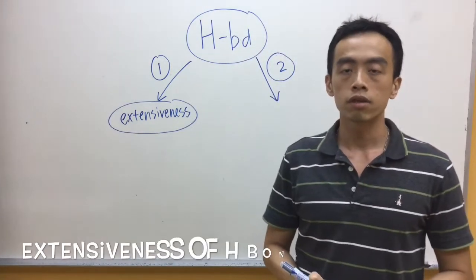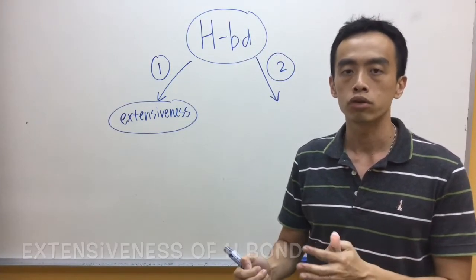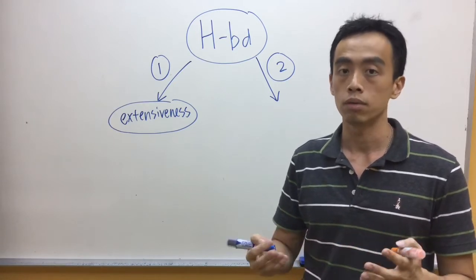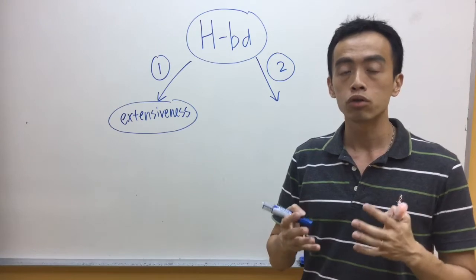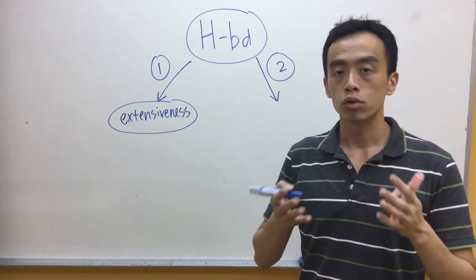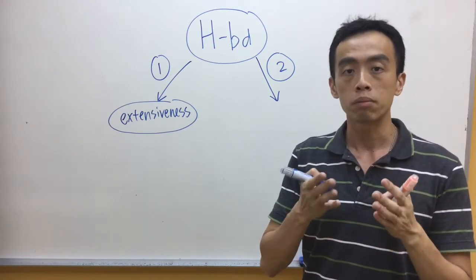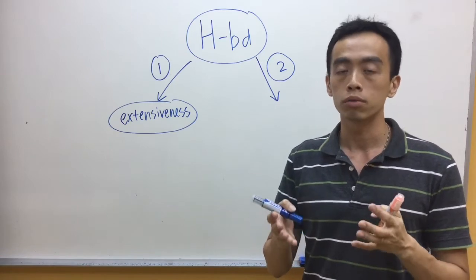Extensiveness of the hydrogen bond refers to the average number of hydrogen bonds each molecule can form with a neighbour. If a particular molecule can form more hydrogen bonds with more neighbours, on average you need to pump in more energy to break more hydrogen bonds per molecule.